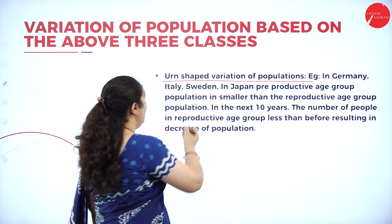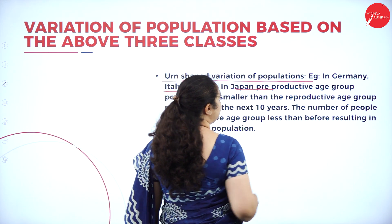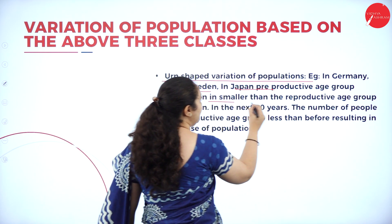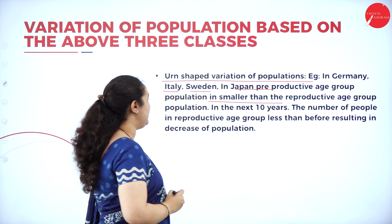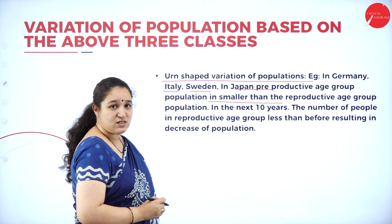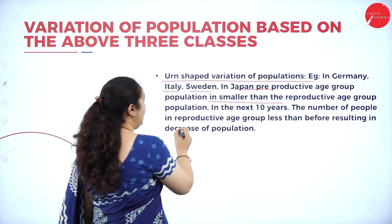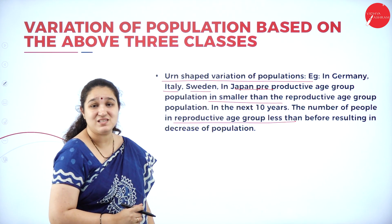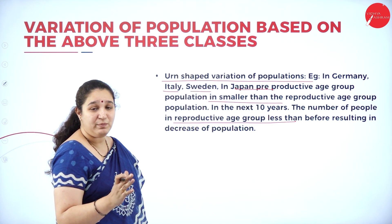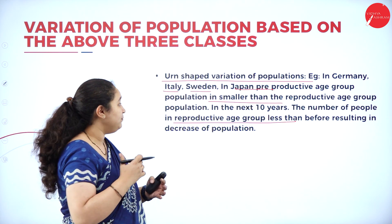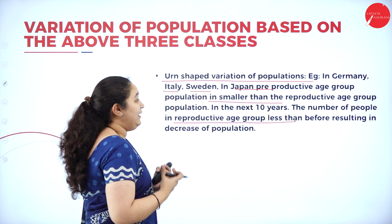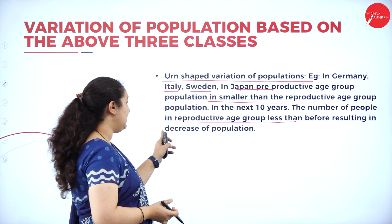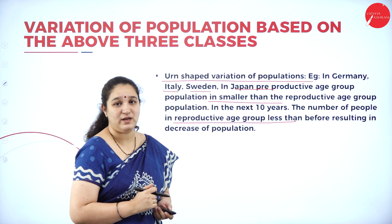Next is urn-shaped variation in population. In countries like Germany, Italy, Sweden, and Japan, the pre-reproductive age group population is smaller than the reproductive age group population. In the next 10 years, the number of people in the reproductive age group will be less than before, resulting in a decrease in population and an urn shape.